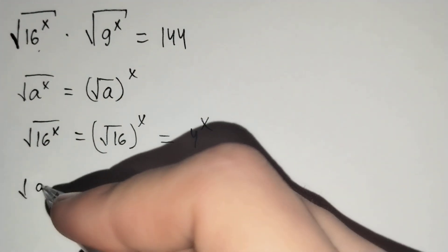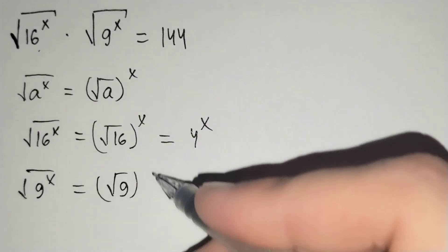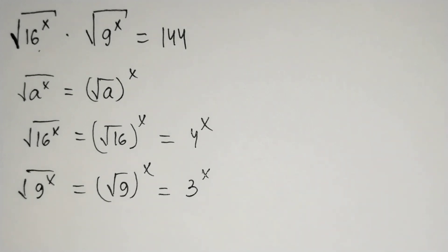Then, the square root of 9 power x equals to the square root of 9 brackets power x, and it does 3 power x.